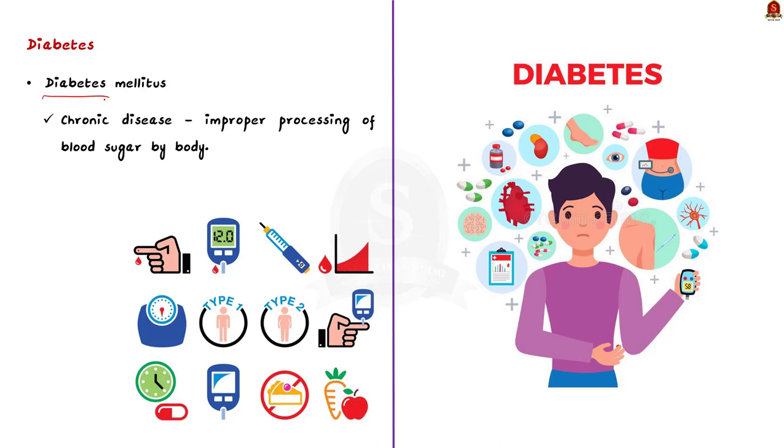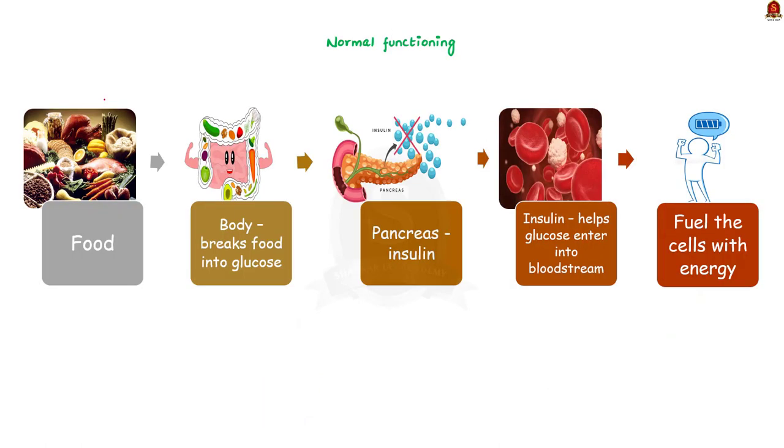When we eat, our body breaks food into glucose. The glucose is sent into the bloodstream to fuel the cells with energy. This triggers the pancreas to release a hormone called insulin. This insulin helps the glucose enter the cells.